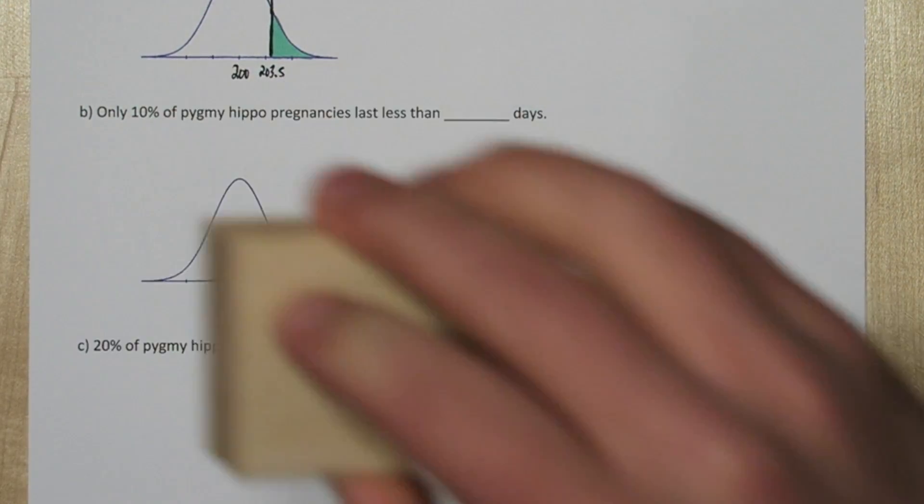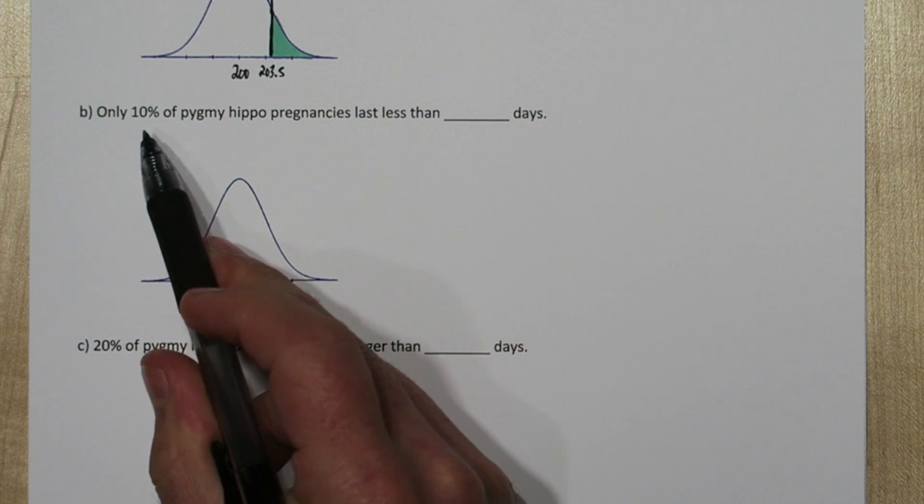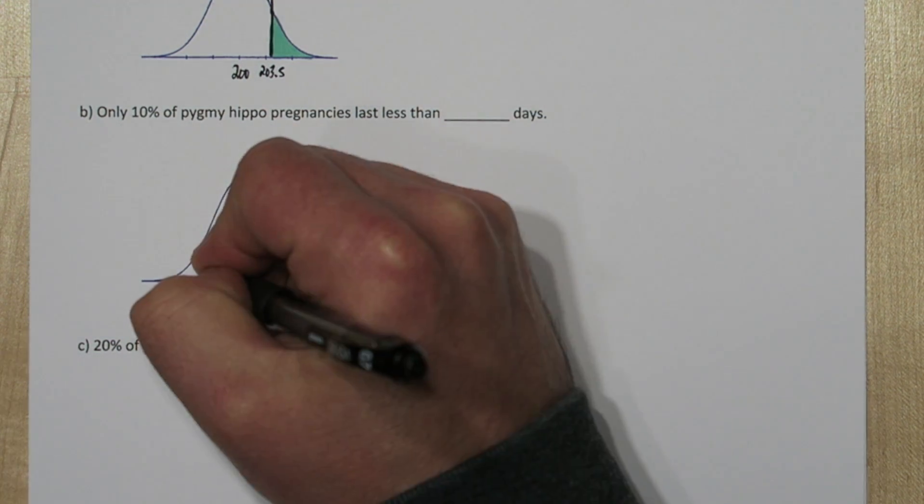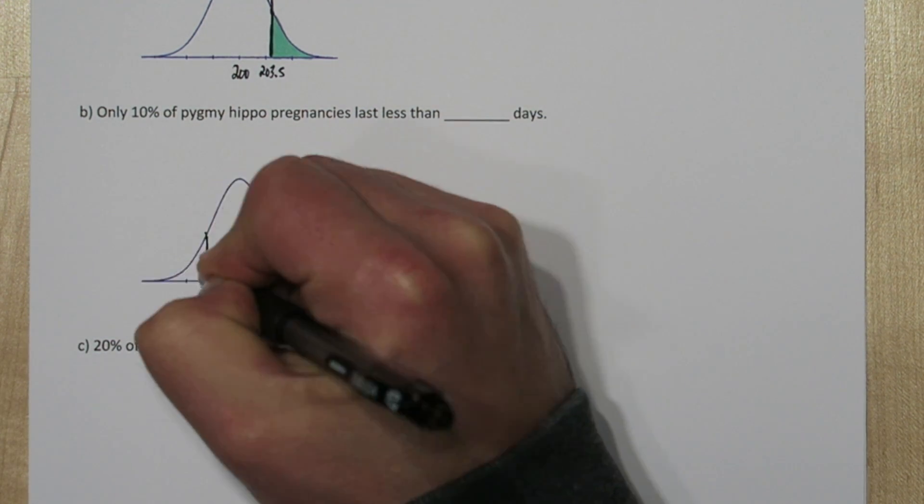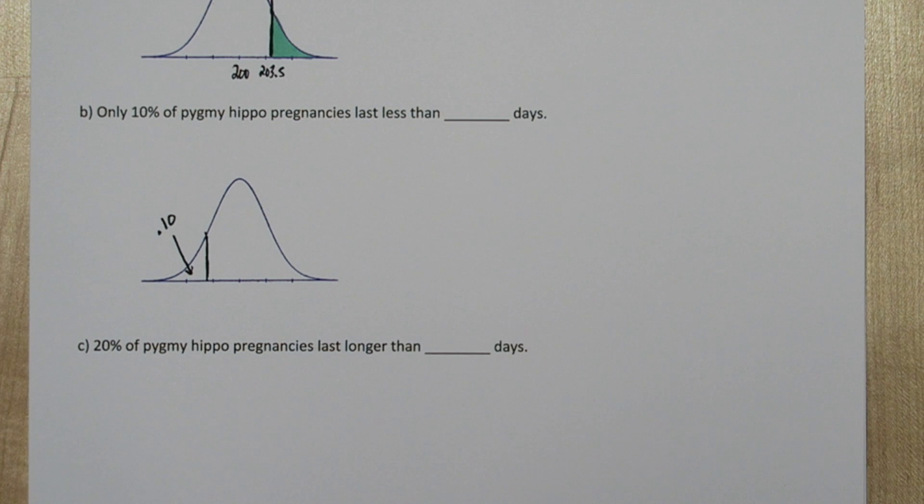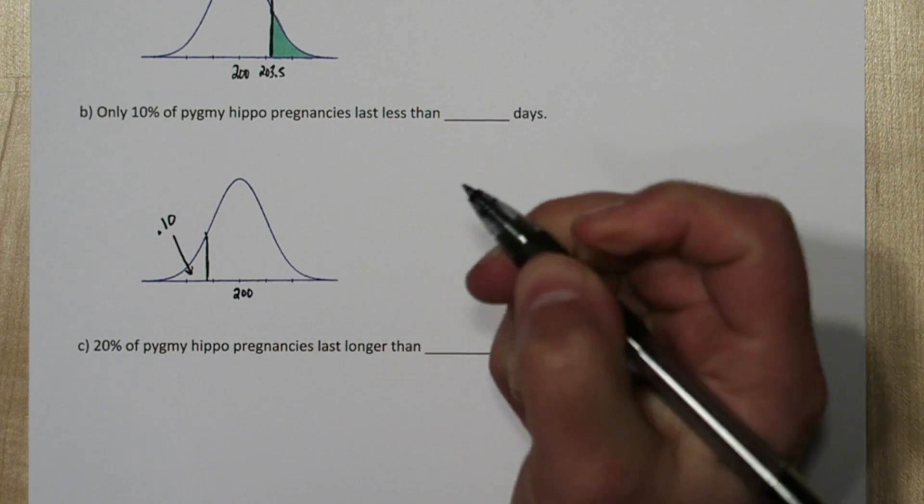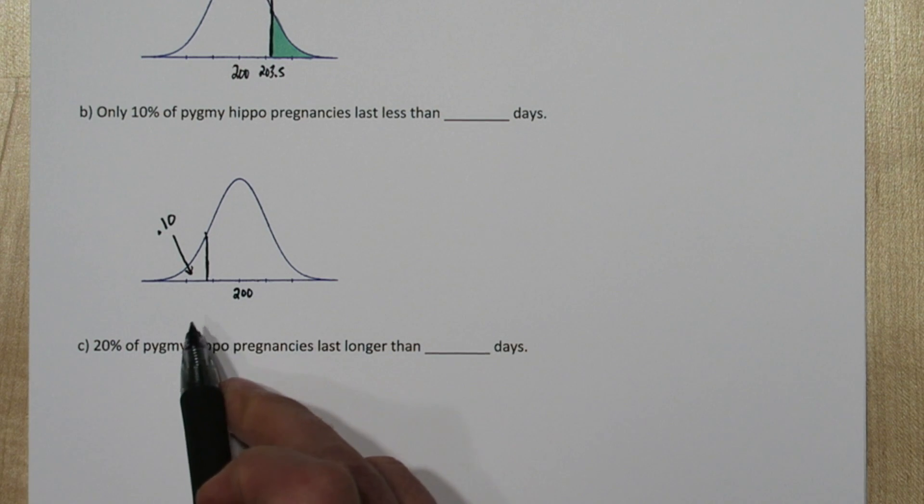For part B we're going to draw another normal distribution. In this situation, we have the area, the 10%, and we're trying to figure out what the cutoff value is. So we want to know what cuts off the lower 10% of hippo pregnancies. That's probably about here. So we know this number is 200. We're trying to figure out what this cutoff value is.